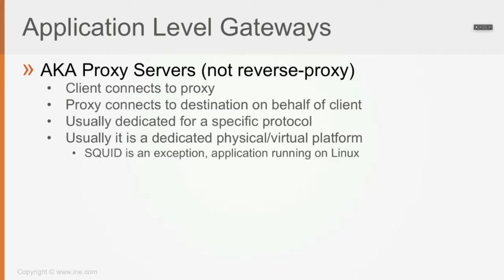An exception to this rule of being a dedicated physical or virtual platform is, for example, Squid, which is an application running on Linux, or any kind of SMTP software with SMTP advanced inspections available — any SMTP application you may run on a Linux or Windows box. But in general, the real application level gateways, which have a lot of security features required nowadays, are going to run on a dedicated physical or virtual platform.